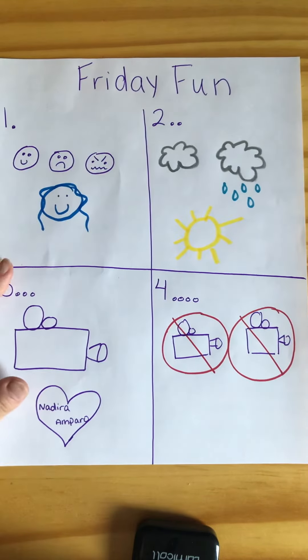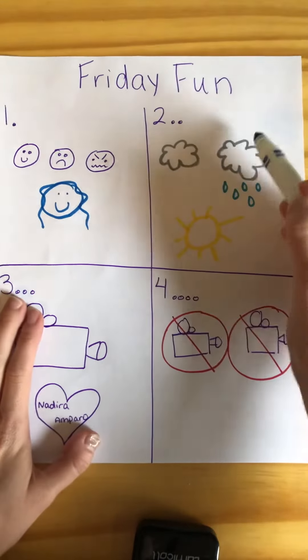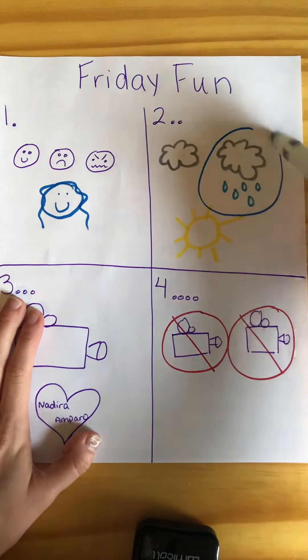So number two. Today I think it's supposed to rain all day. It's not raining yet but it is a little gray out. So today it will be rainy.